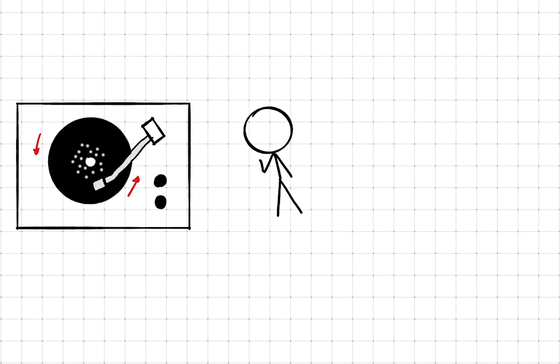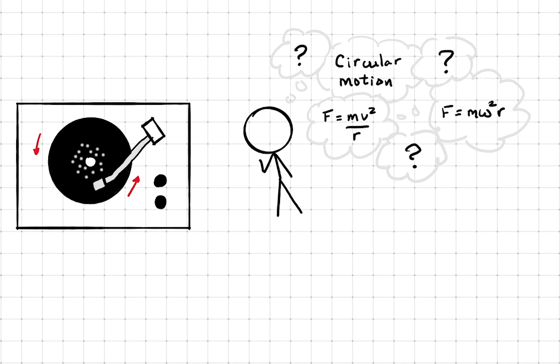You being a physicist, you speculate that this has something to do with circular motion and centripetal force. So you need to think of the relationship between how far these dust particles are from the center of the rotating disc and the centripetal force needed to keep these dust particles in circular motion.